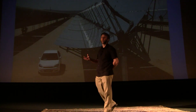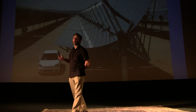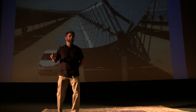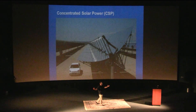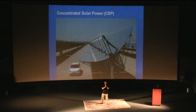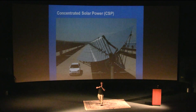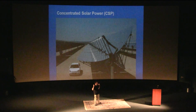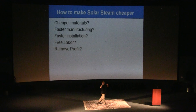With solar, this is known as concentrated solar power. Concentrated solar power takes a large surface area of sunlight and focuses it down to a small point. By doing that, it gets very, very hot. And all you have to do is throw water at that very hot point and you create steam.